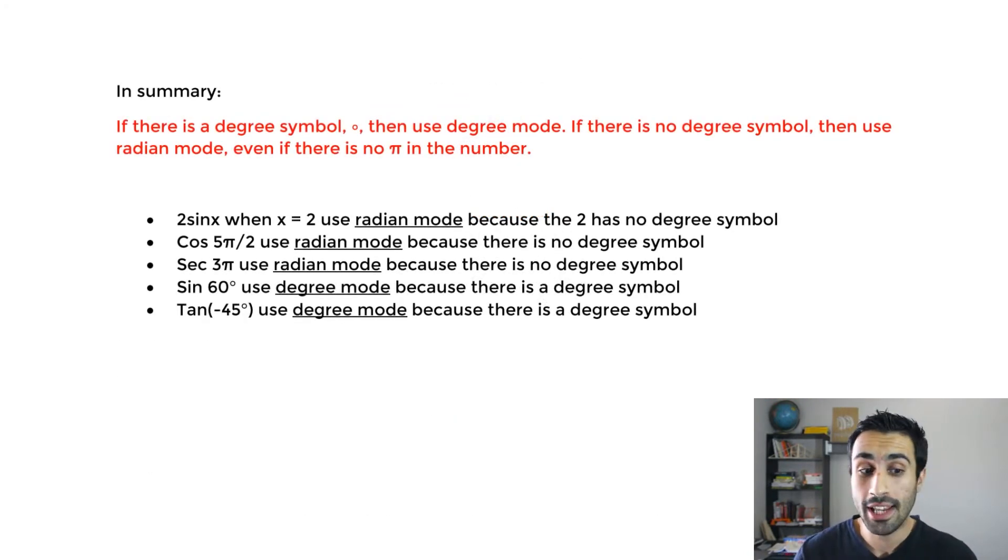So in summary, if you understand this part, you should be set. If there is a degree symbol, then use degree mode. If there's no degree symbol, then use radian mode, even if there's no pi in the number. We don't have to have a pi, but if we have no degree symbol, use radian mode.